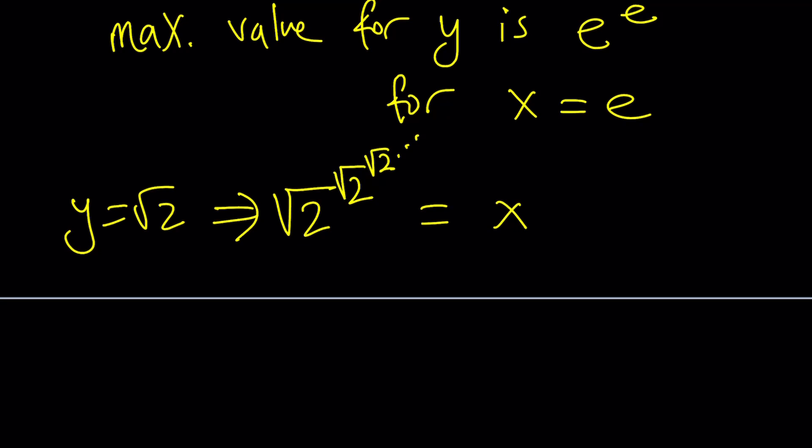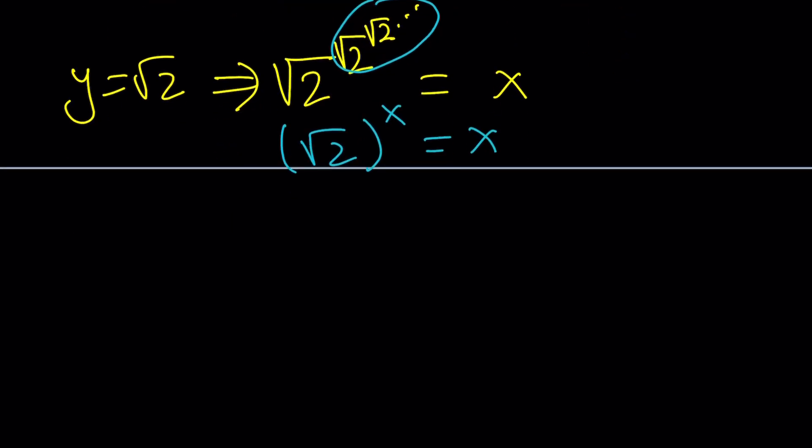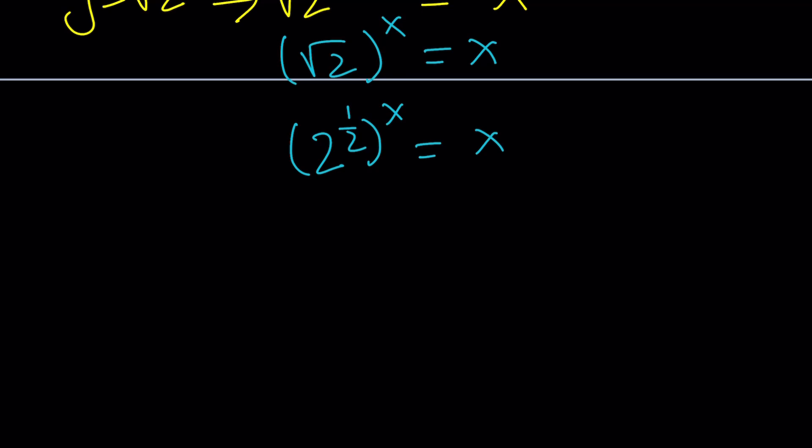From here, you realize that this whole thing is also x, so square root of 2 to the power x equals x. Now if you think about it, this can be written as 2 to the power 1 half to the power x equals x. And then if you raise both sides to the power 1 over x and put the x's on the left, you get x to the power 1 over x equals 2 to the power 1 half, which should imply that x equals 2, at least, right?